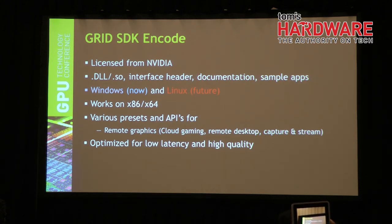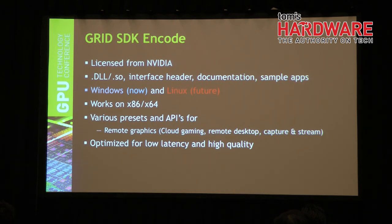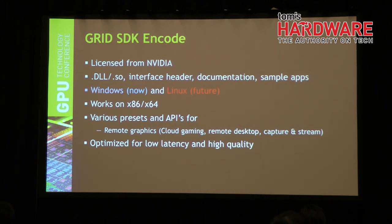There are two SDKs: the NVENC SDK for pure video applications (transcoding, encoding, archiving, video editing), and the Grid SDK for capture-and-encode low-latency streaming. Both are optimized for their specific use cases. The Grid SDK settings are limited to only those useful for low-latency streaming, while NVENC SDK exposes more granular control.